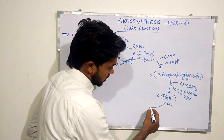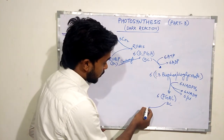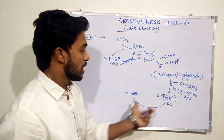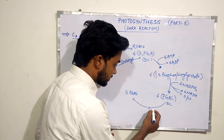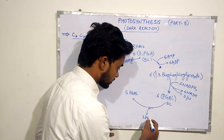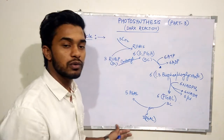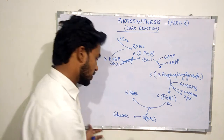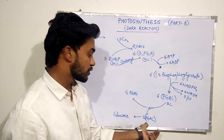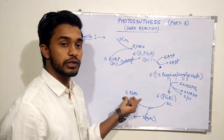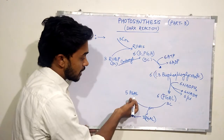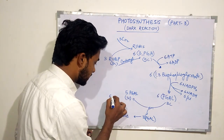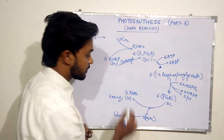Of the six molecules of PGAL, five molecules are involved in the regeneration step, but one molecule of PGAL is involved in the production of glucose. Five molecules of PGAL go to regeneration, and one molecule goes toward glucose production. PGAL is a three-carbon compound, so the total number of carbons in 5 molecules of PGAL is 5 × 3 = 15 carbons.